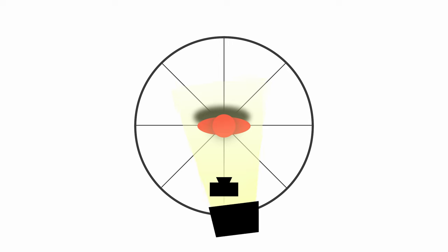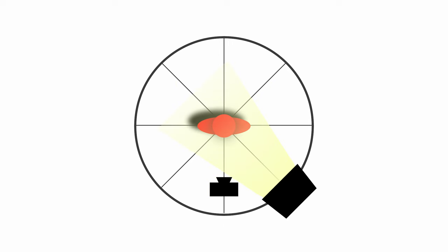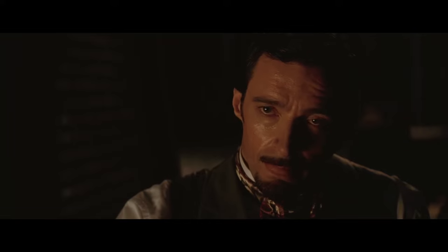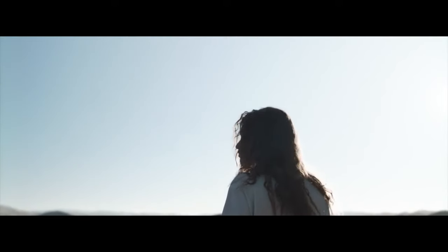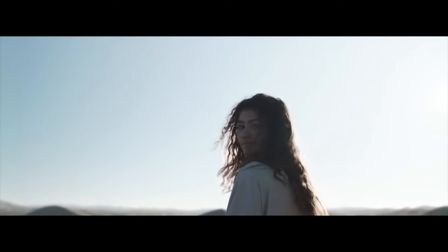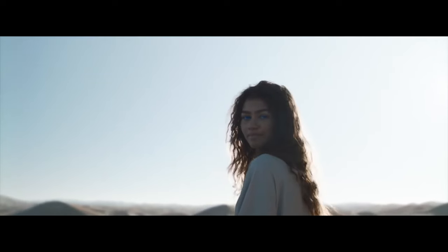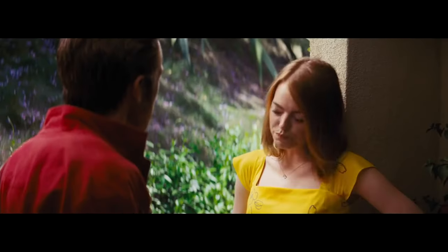A subtle change in angle can make your content look so many different ways — inviting, friendly, dramatic, and edgy. These examples will serve as a perfect visual guide on how to set up your shot for the vibe that you want. Pay close attention to what the shadows tell you about the character.